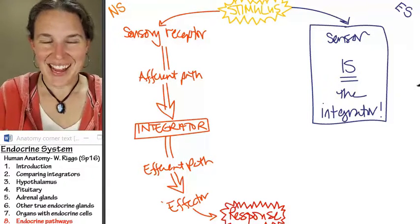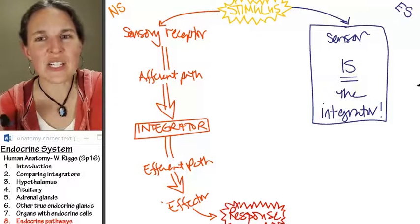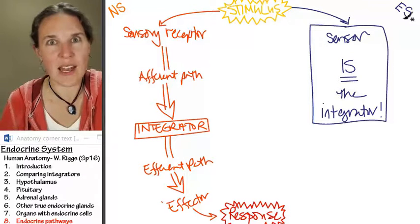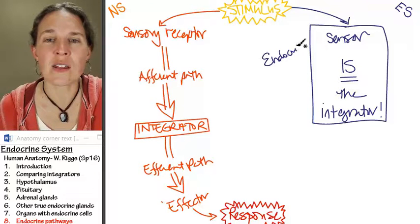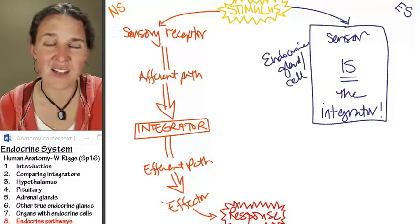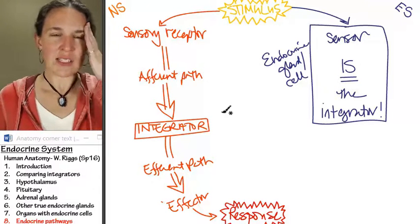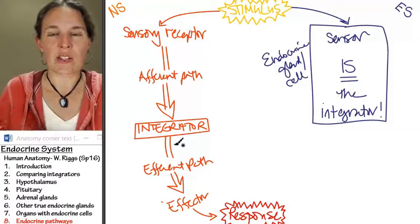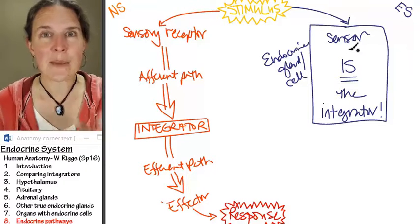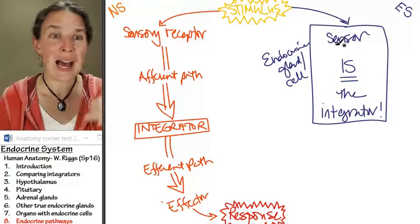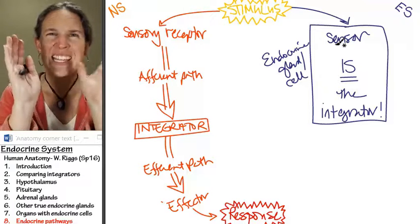So the stimulus comes in and it stimulates the sensor, but the sensor is the integrator. And what is this? What is this if we're in the endocrine system? This is endocrine gland or cell. There is no other sensory receptor. There is no afferent path. And I've always thought of endocrine glands as they're just integrators. But it's like, how does the integrator get the message to do something? There's a sensor on the integrator. And the sensor picks up the stimulus, whatever it is, low blood calcium, high glucose concentration, more metabolism needed, like something triggers this. The integrator senses that.